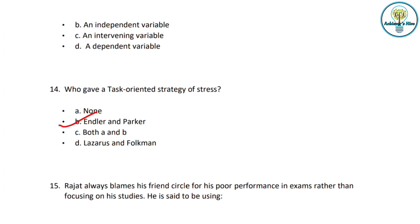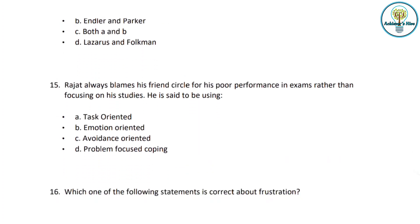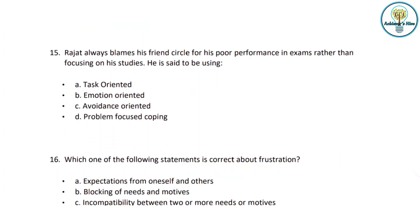Next question: Rajat always blames his friend circle for his poor performance in exams rather than focusing on his studies. Which strategy is he using? He is simply avoiding his own responsibility and blaming it on others. Option C is the correct answer — this is an avoidance-oriented coping strategy.